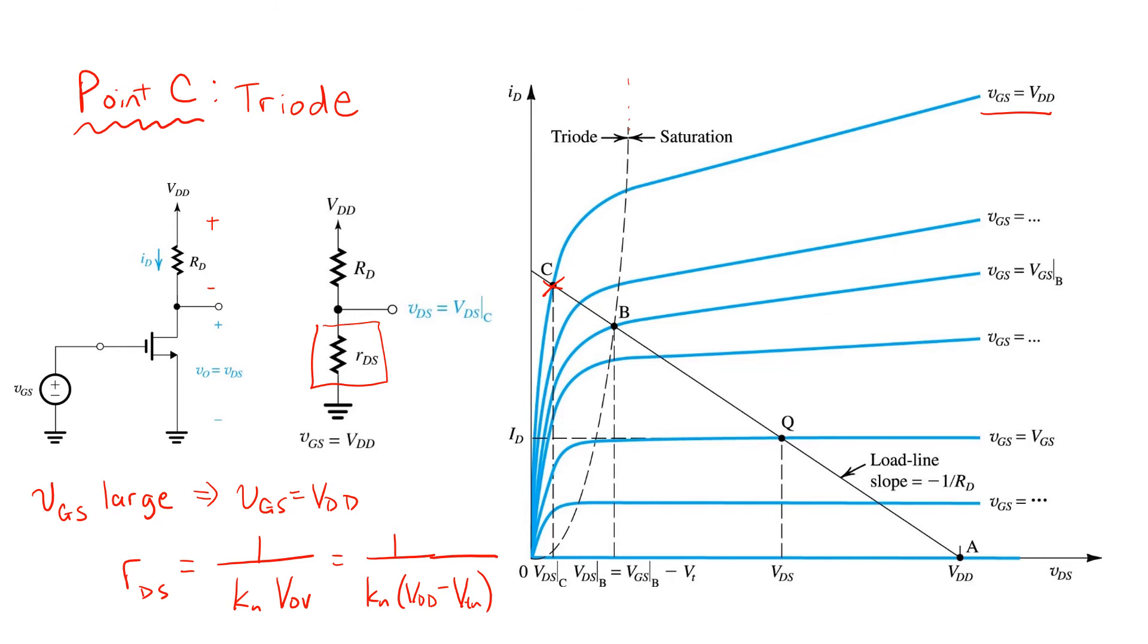And analytically, then, we can solve for the output voltage VDS, in this case, approximately at least, by using a voltage divider expression.